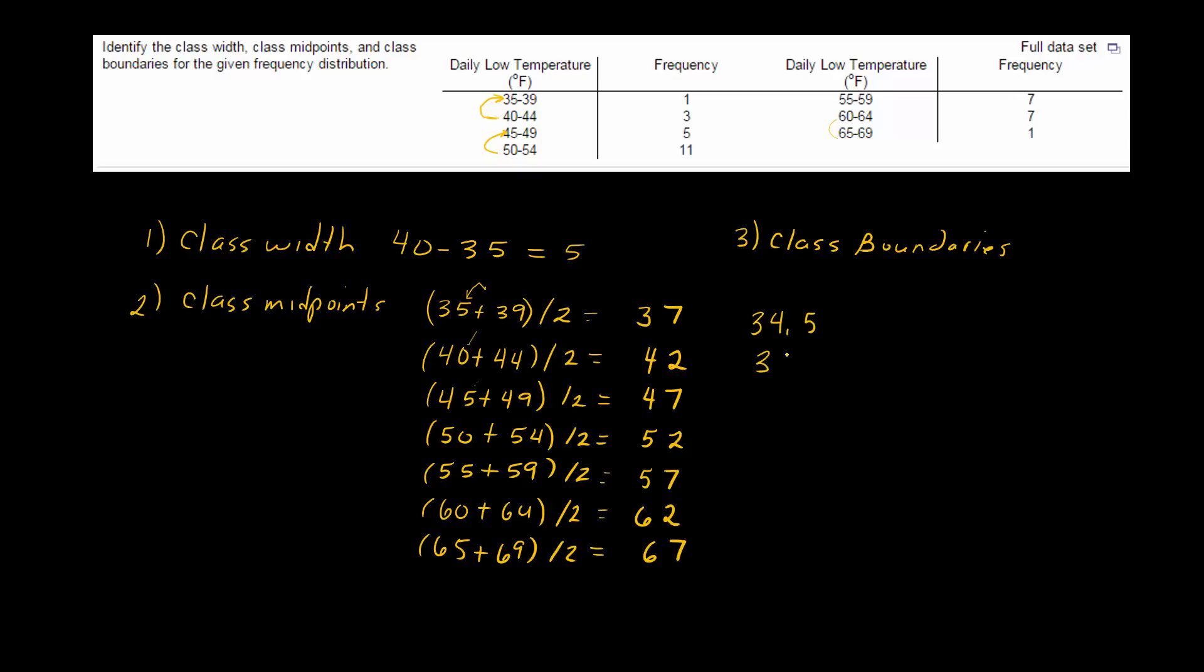44.5, 49.5. So you can see I'm just looking at this column right here and adding 0.5: 54.5, 59.5, 64.5, and 69.5.